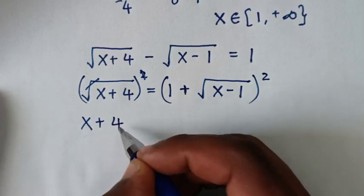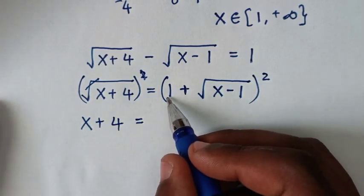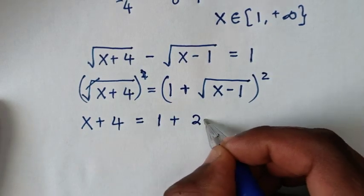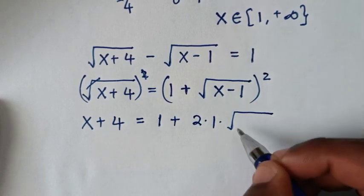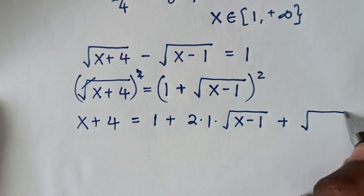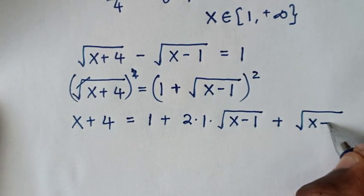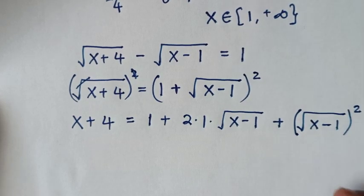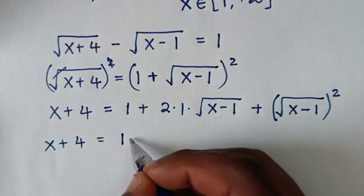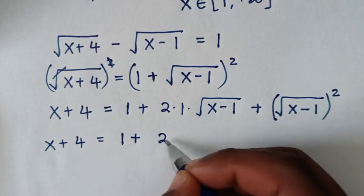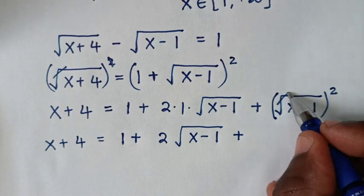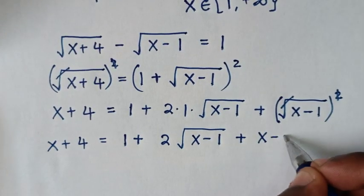Squaring the left side, the square root cancels the square to give x plus 4. On the right side, squaring (1 plus square root of (x minus 1)) gives 1 squared, which is 1, plus 2 times 1 times square root of (x minus 1), plus the square of square root of (x minus 1). The square root cancels the square, giving plus x minus 1.